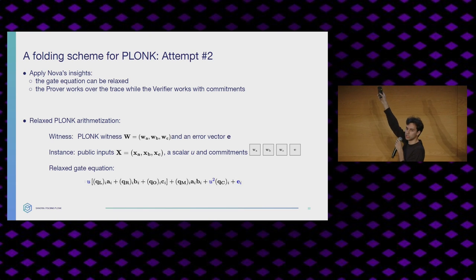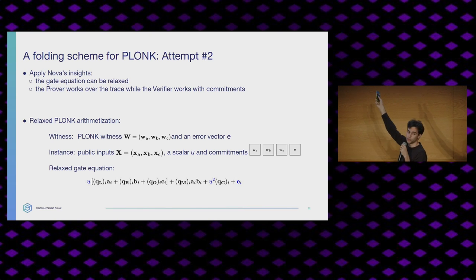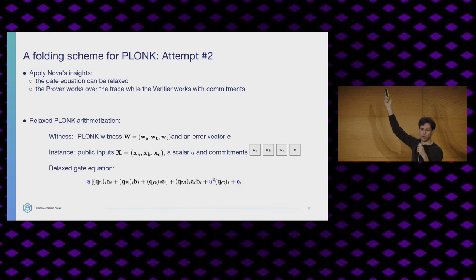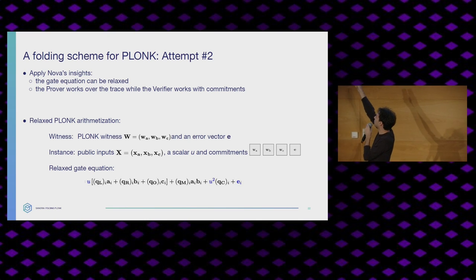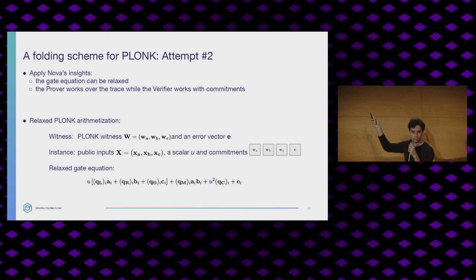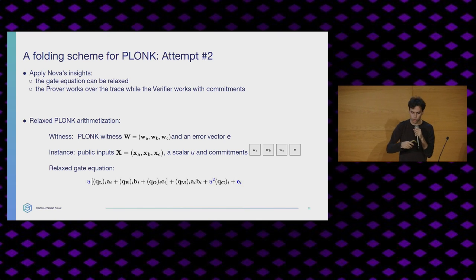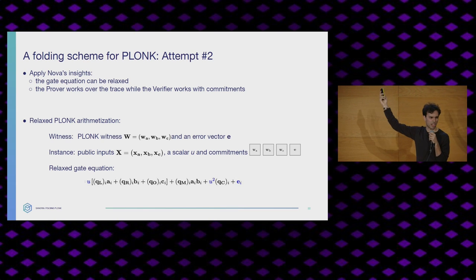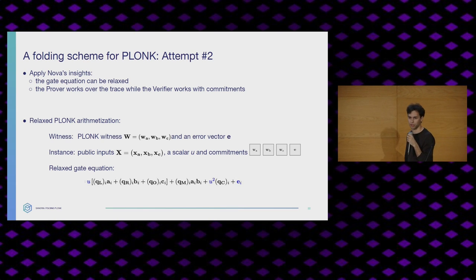Why do we do this? If you count the number of variables in each term, you'll see that we're now degree two everywhere. QM · A_i · B_i is degree two. QC had no degree, so we gave it U², making it degree two. Everything that was degree one gets multiplied by U, making it degree two as well. So we now have a homogeneous function. We've also added this error term E — kind of a trash can — we'll throw stuff in there that we don't like.